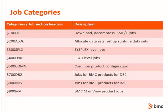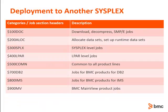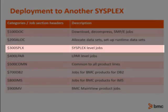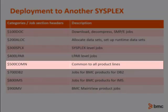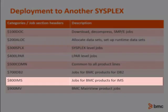Depending on the products being installed, you may not have all of these job categories. The job categories will aid in deploying products to another environment. To deploy to a different sysplex, I would start running jobs from the $300 series and continue through the remaining series of jobs.